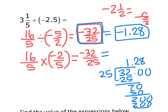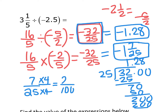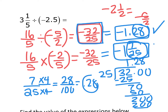A student could also write this as negative one and seven over twenty-five as a mixed number, which equals negative 1.28. Note that seven over twenty-five equals 0.28 — multiply numerator and denominator by four to get twenty-eight over one hundred, which is 0.28. So all three forms — negative 32/25, negative 1 and 7/25, and negative 1.28 — are correct.